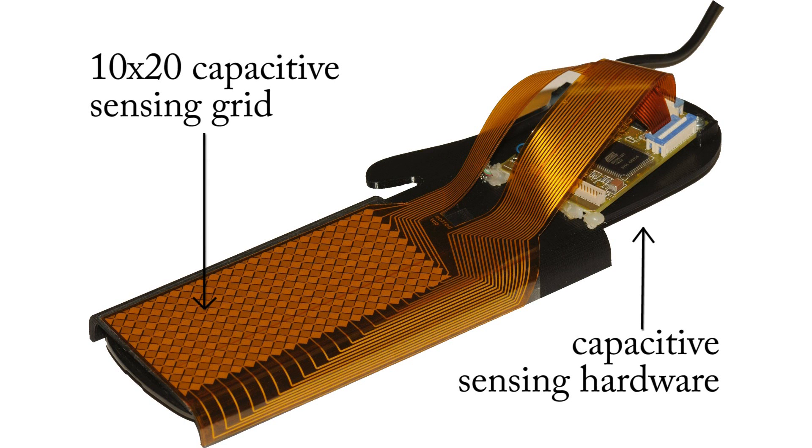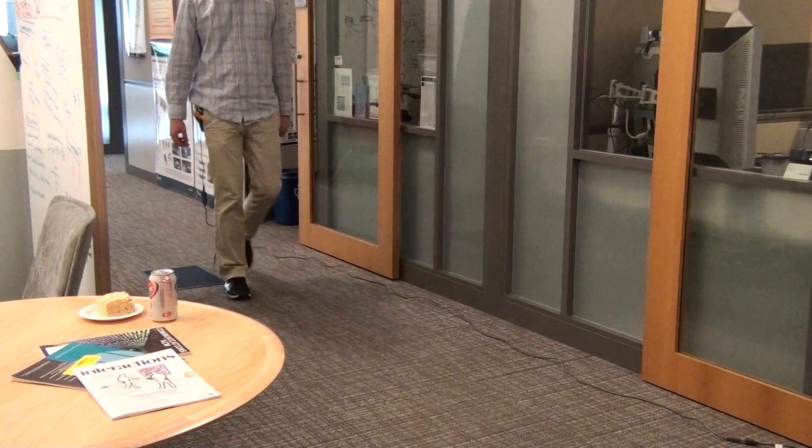Pocket Touch is a capacitive sensing prototype which enables eyes-free touch input on a mobile device without removing the device from the pocket of one's pants, shirt, bag, or purse.